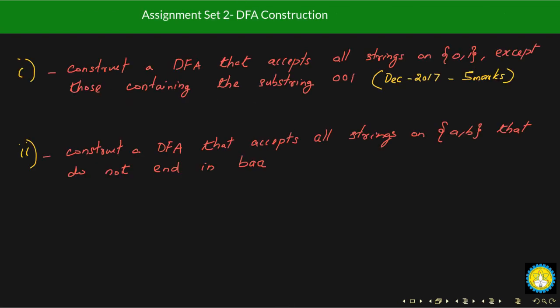This is your assignment set two on DFA construction. First question: construct a DFA that accepts all strings on {0,1} except those containing the substring zero-zero-one. Construct a DFA for strings containing zero-zero-one as a substring, then produce its complement. This is from a December 2017 university question for five marks. Also try: construct a DFA that accepts all strings on {a,b} such that they do not end in BAA. Construct the DFA for strings ending in BAA, then convert it to its complement form.